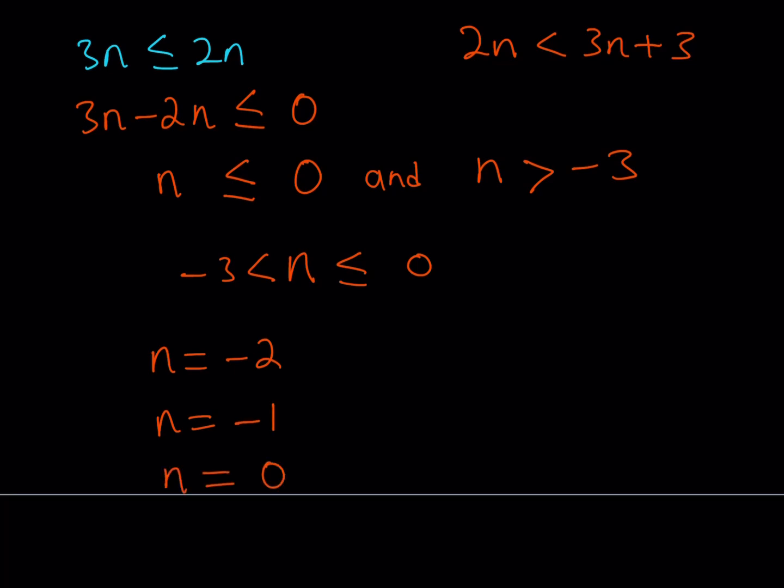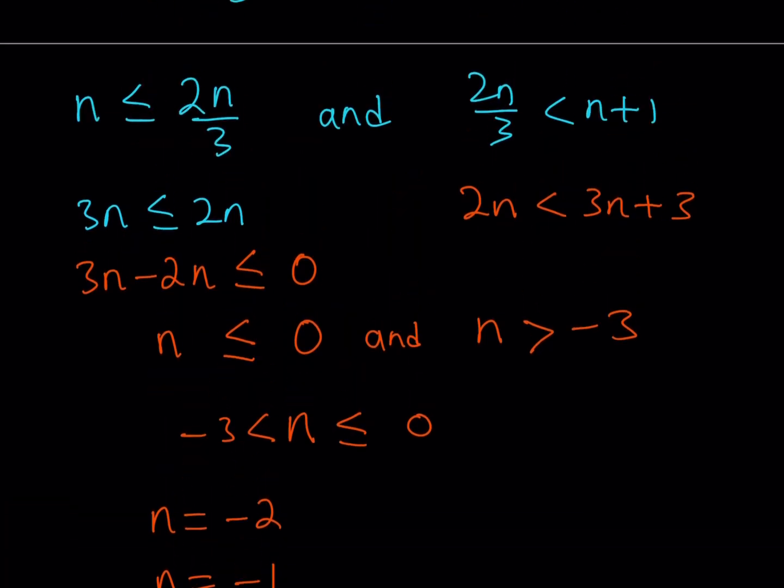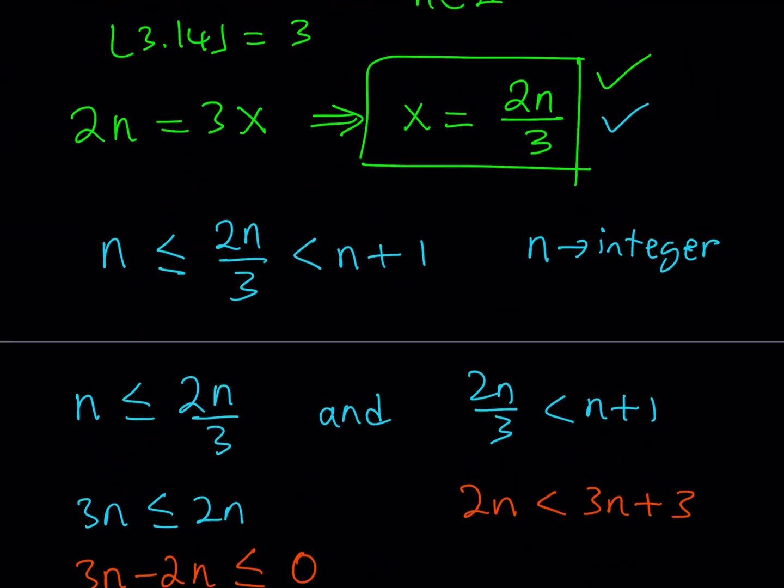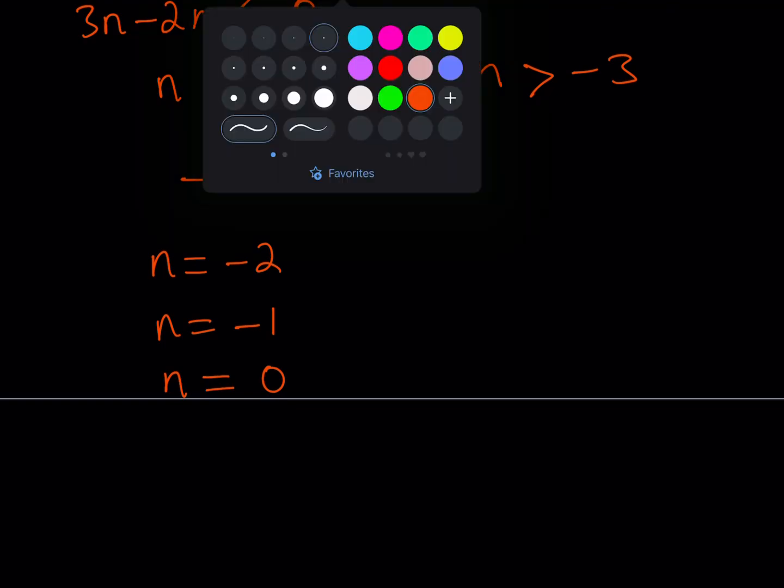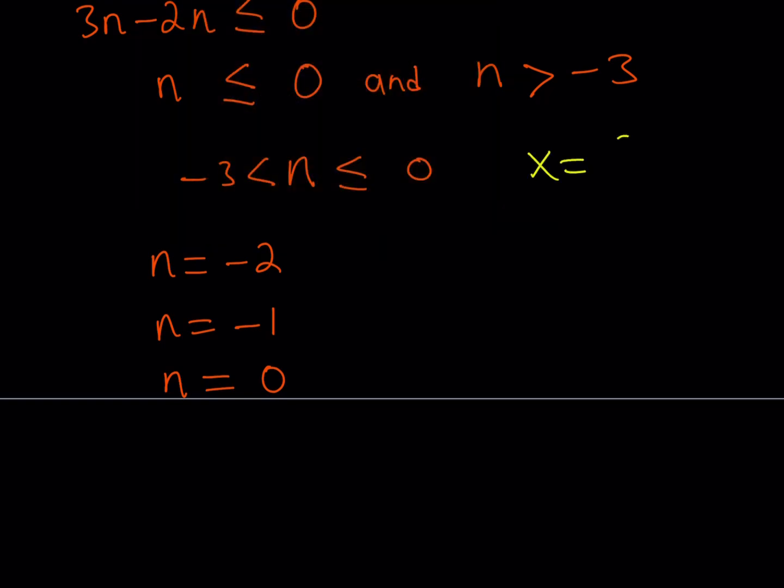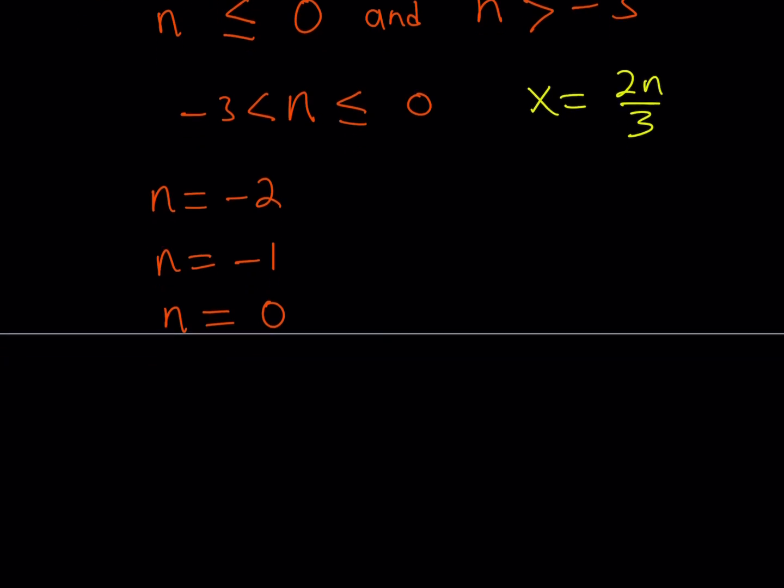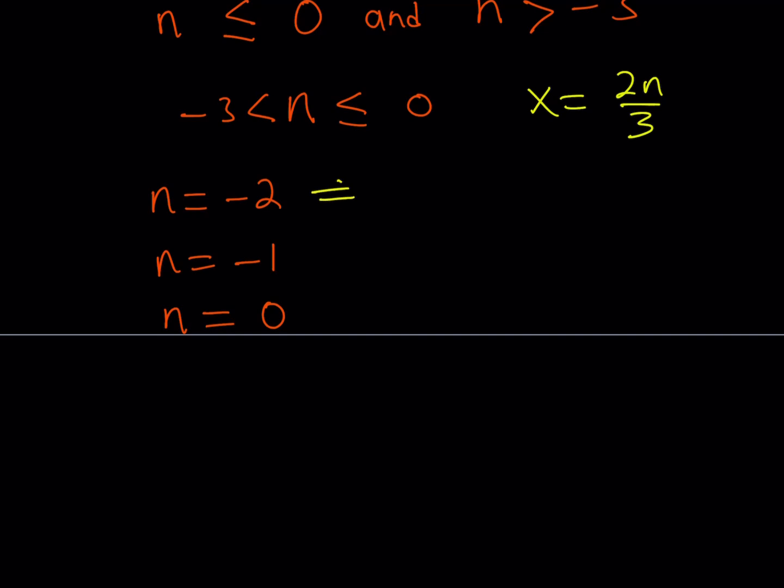Well, interesting. So we only found 3 n values because n is an integer. Now, this is going to take us to the x values because, remember, we said that x is equal to 2n over 3. So, by using that, we can basically find the x values. Let's go ahead and find them. So, if n is equal to negative 2, then x is going to be negative 4 thirds. If n is equal to negative 1, x is going to be negative 2 thirds. And if n is equal to 0, x is going to be 0.